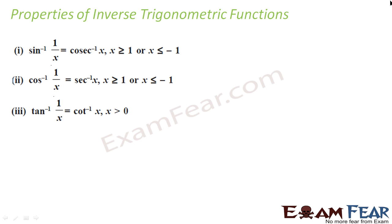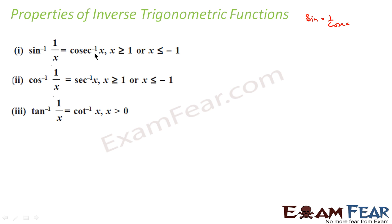Now let's understand some properties of the inverse trigonometric function. The first property says sin⁻¹(1/x) = cosec⁻¹(x). The second says cos⁻¹(1/x) = sec⁻¹(x). And the third is tan⁻¹(1/x) = cot⁻¹(x). It's very easy to remember: since 1/sin = cosec, you can say sin⁻¹(1/x) = cosec⁻¹(x). Similarly, 1/cos = sec, so cos⁻¹(1/x) = sec⁻¹(x), and 1/tan = cot, so tan⁻¹(1/x) = cot⁻¹(x).